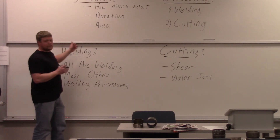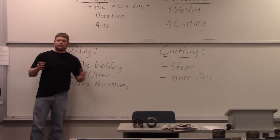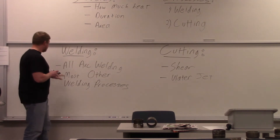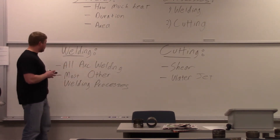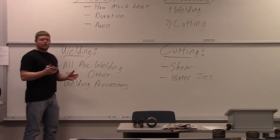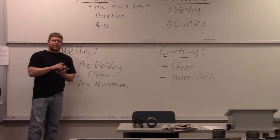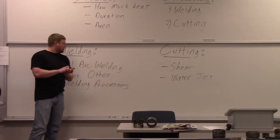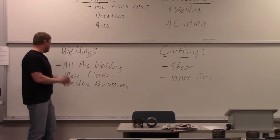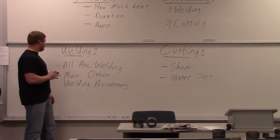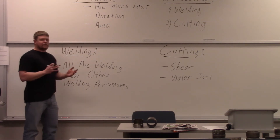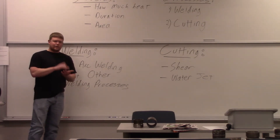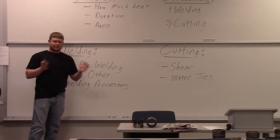What kinds of welding have a heat affected zone? All arc welding and most other welding processes. There are some cold processes, but they still heat things up. Cold welding or diffusion welding doesn't put a lot of heat in, so it's not affected as much. But for the most part, all welding processes have a heat affected zone, and they're very significant. The heat affected zone is, again, the weakest part of the weldment.